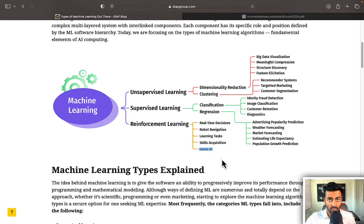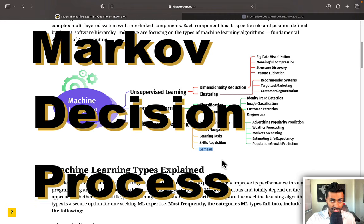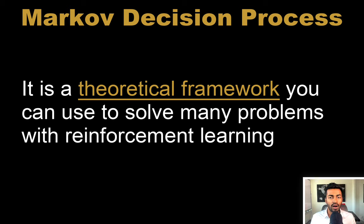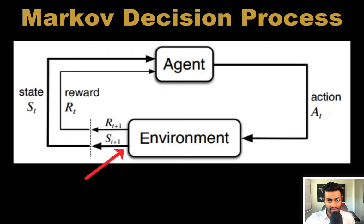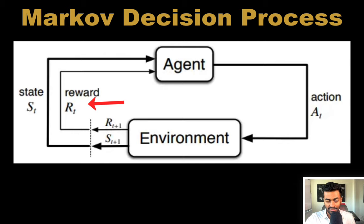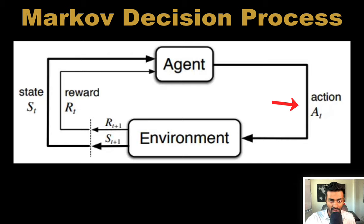We can do so with a theoretical framework called a Markov decision process. A Markov decision process is a theoretical framework that you can use to solve many problems with reinforcement learning. In a Markov decision process, we have two main characters: an agent and an environment. The agent will perform some action in an environment, and the environment in turn will emit a state and a reward, which is consumed by the agent and influences its next action, and so on.